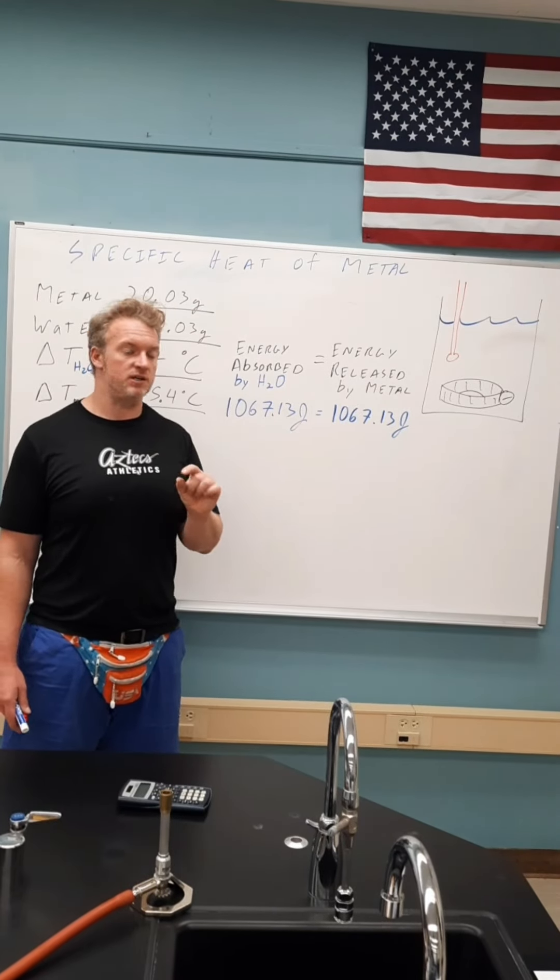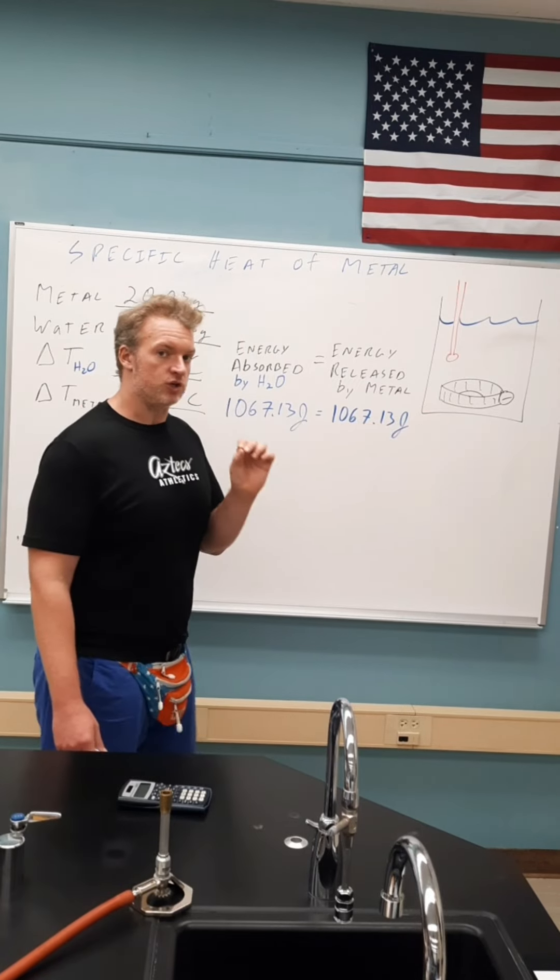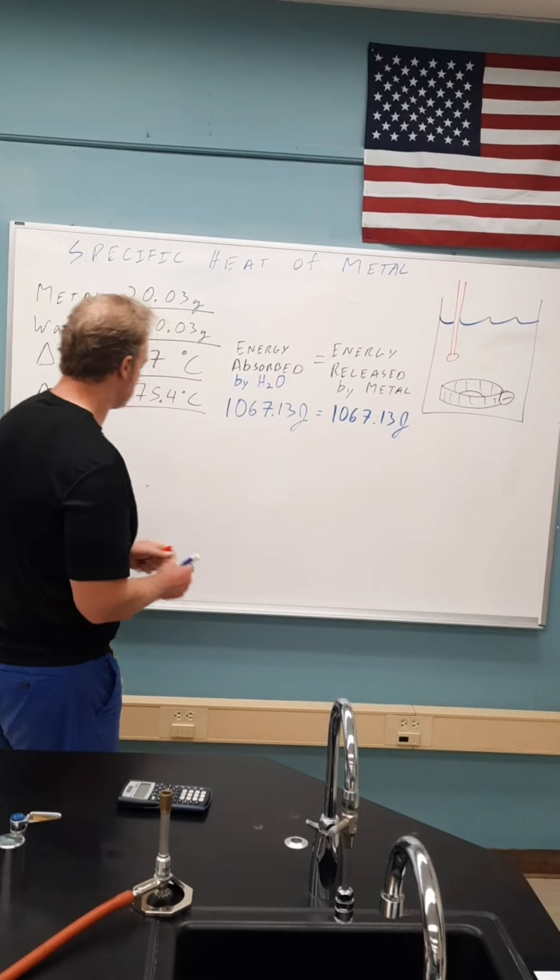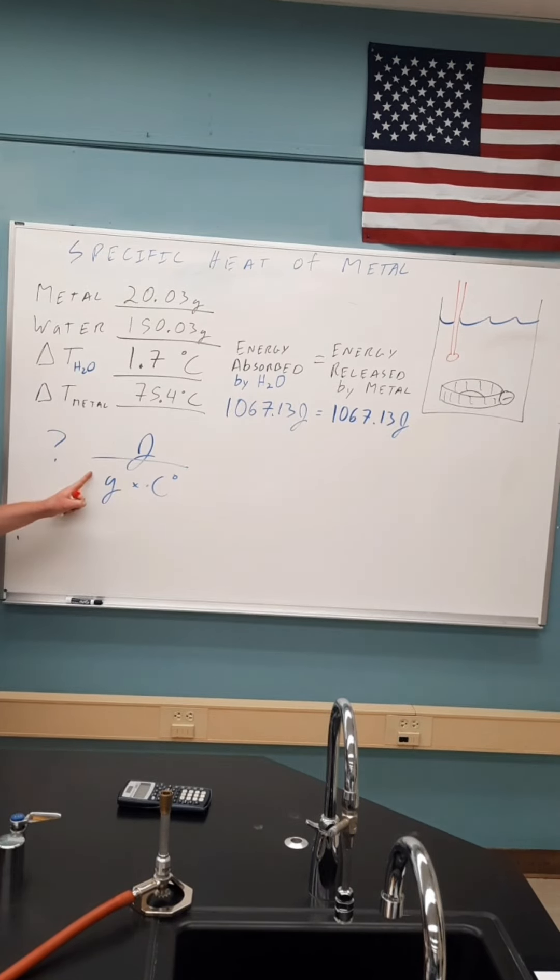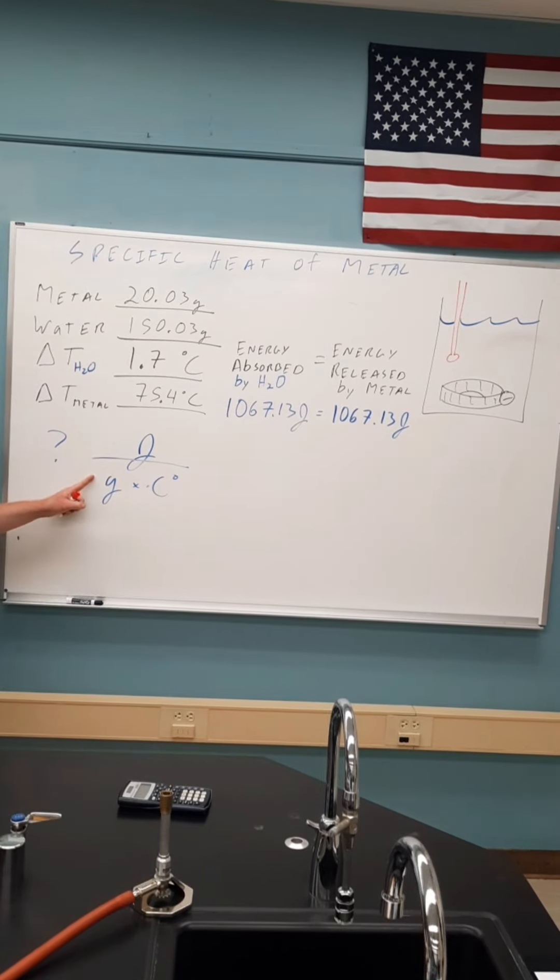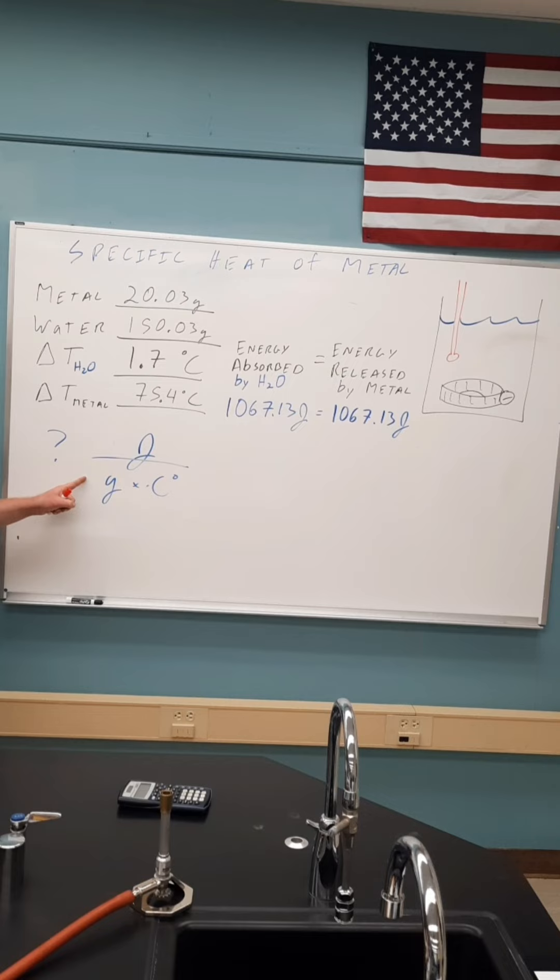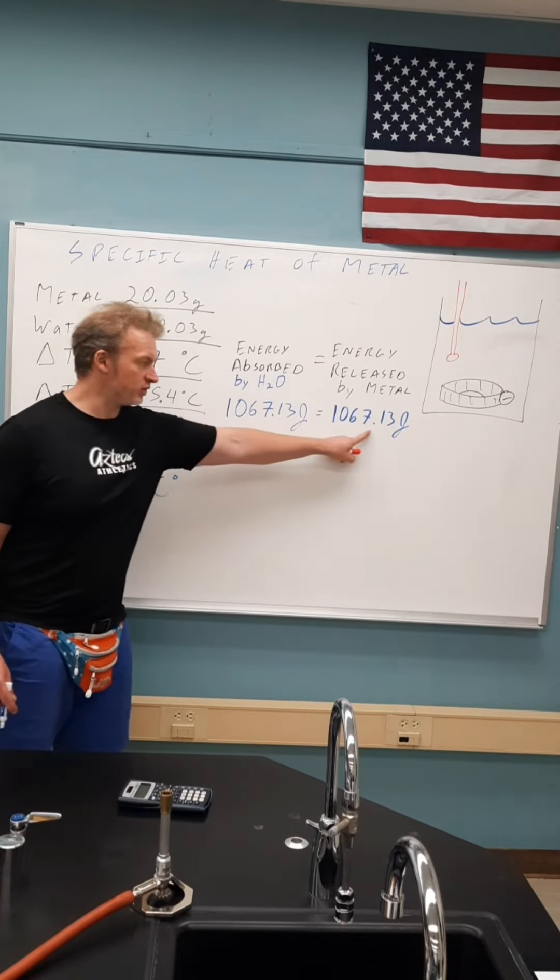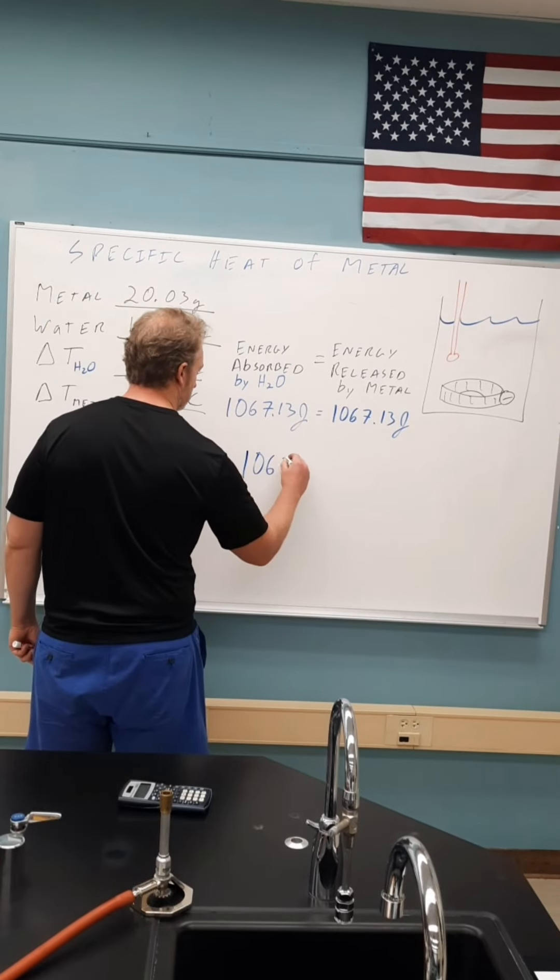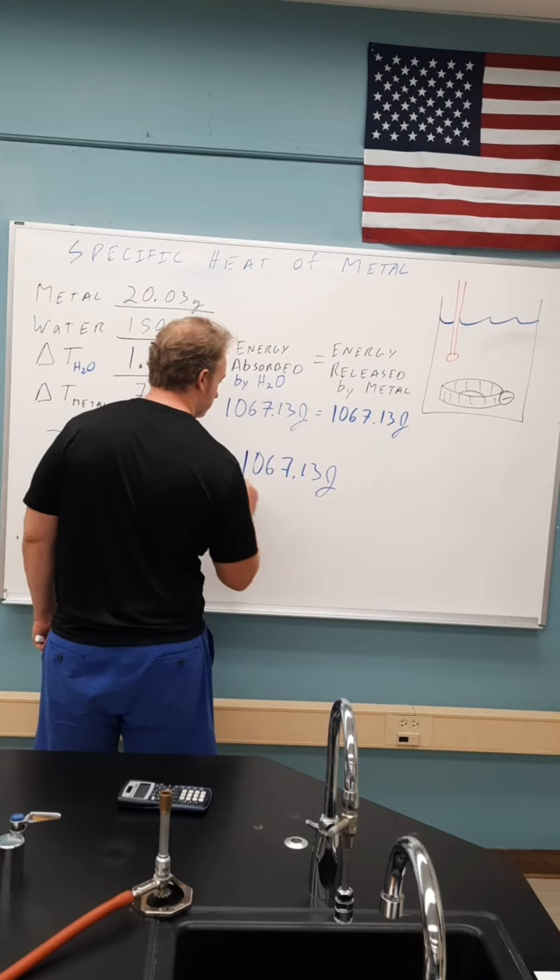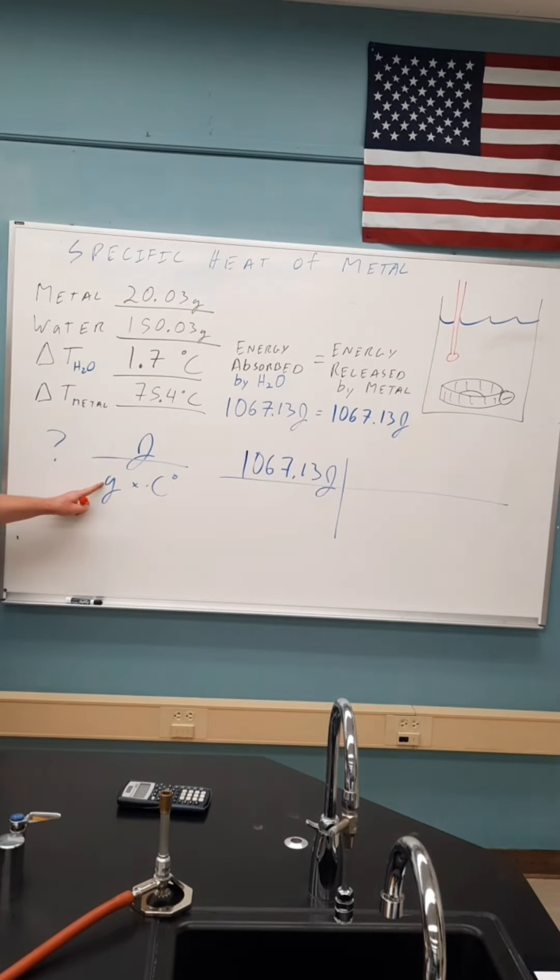Now, to calculate the specific heat of this unknown metal, the units of specific heat are always joules per gram per degree Celsius. This is what we are trying to calculate about the metal. This cluster here is called specific heat. So we need to take all of our numbers about the metal and set them up according to the scaffold. The metal happened to release this much energy because of this assumption. So let's start our scaffold.